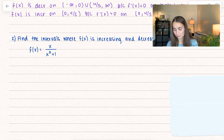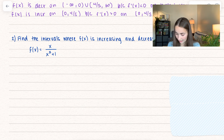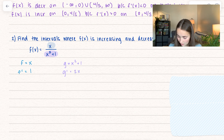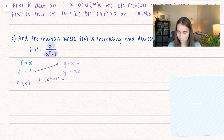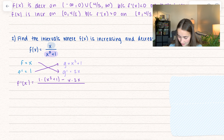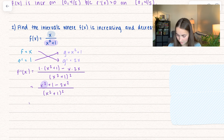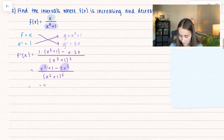Now we'll find the intervals where f of x is increasing and decreasing for f of x equals x over (x squared plus 1). This requires quotient rule. Our numerator is x and denominator is x squared plus 1. The derivative of x is 1 and the derivative of x squared plus 1 is 2x. So f prime of x equals 1 times (x squared plus 1), minus x times 2x, all divided by (x squared plus 1) squared. Simplifying: x squared plus 1 minus 2x squared, which gives negative x squared plus 1 in the numerator.